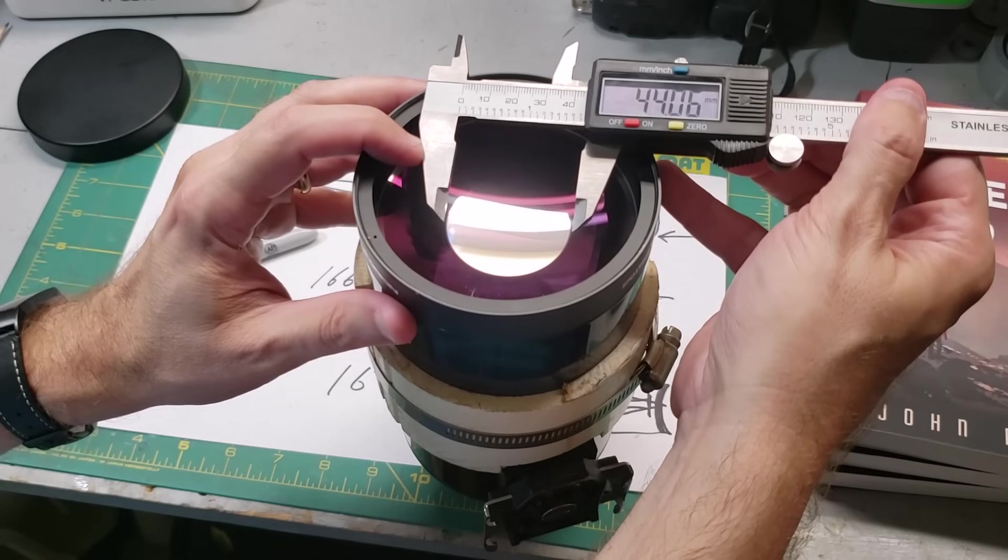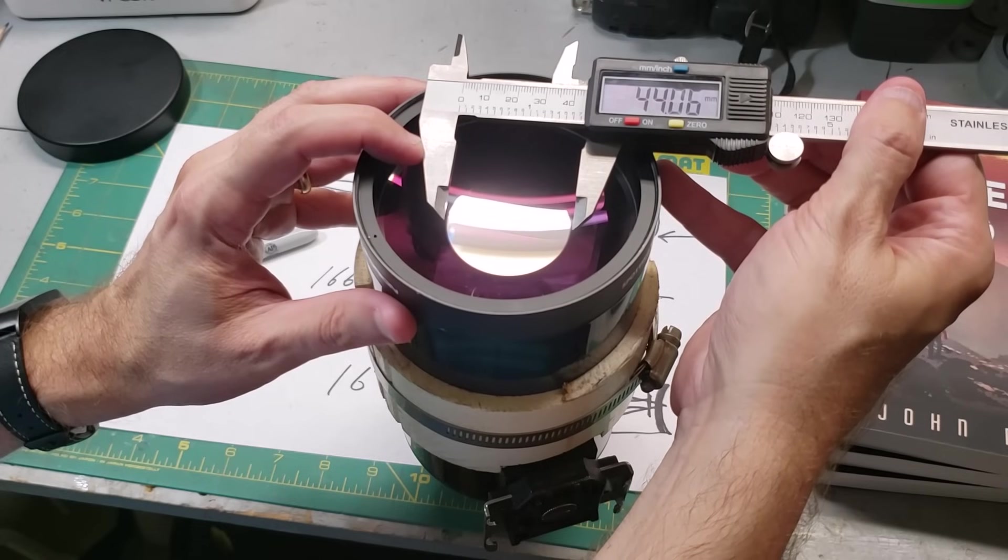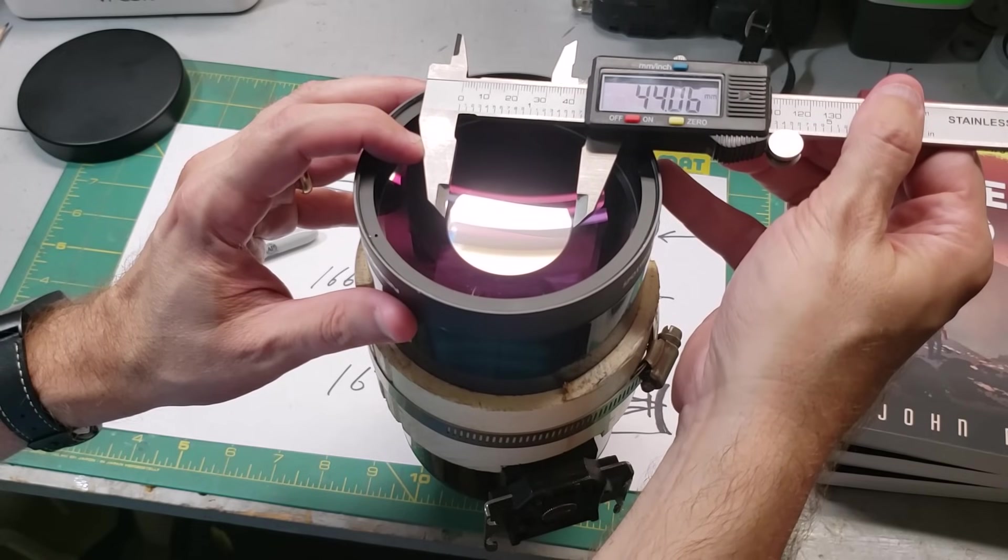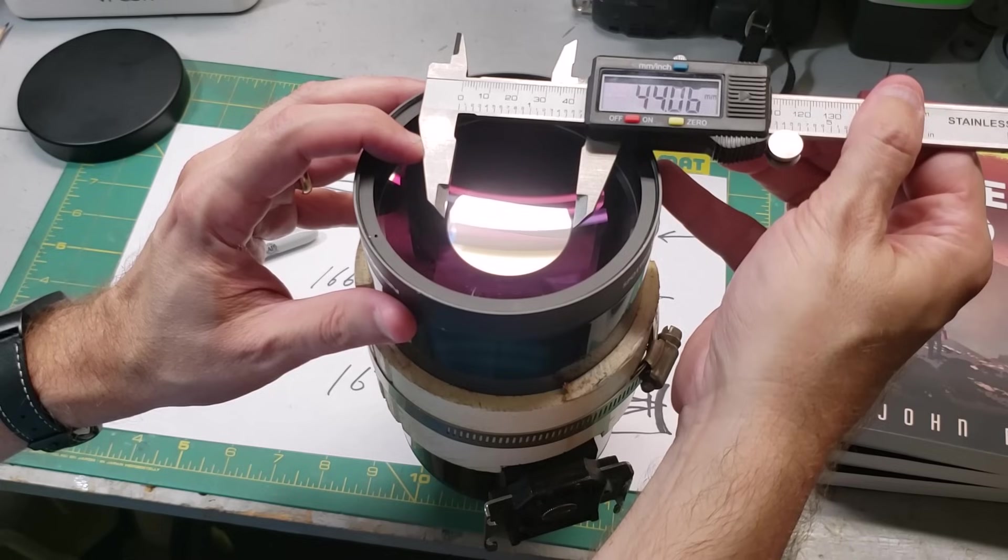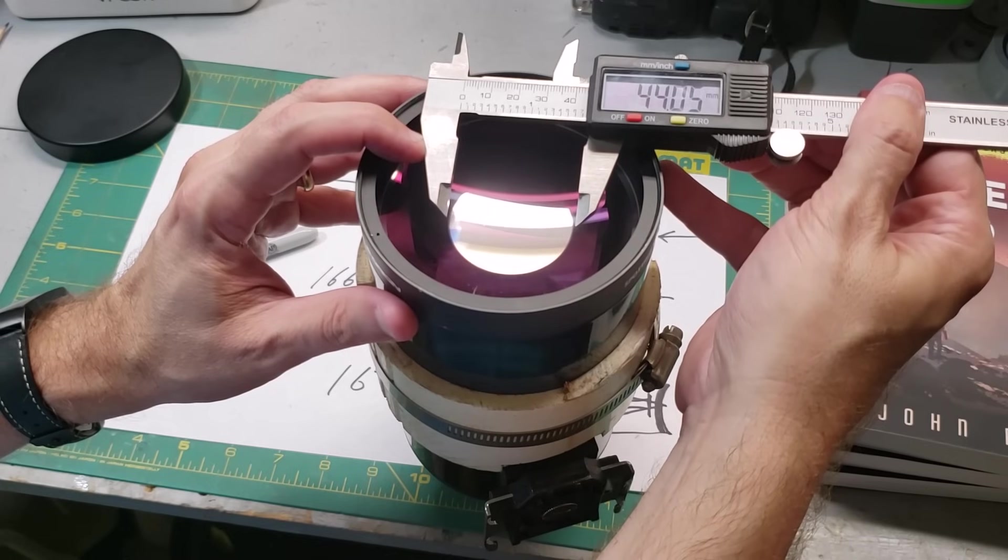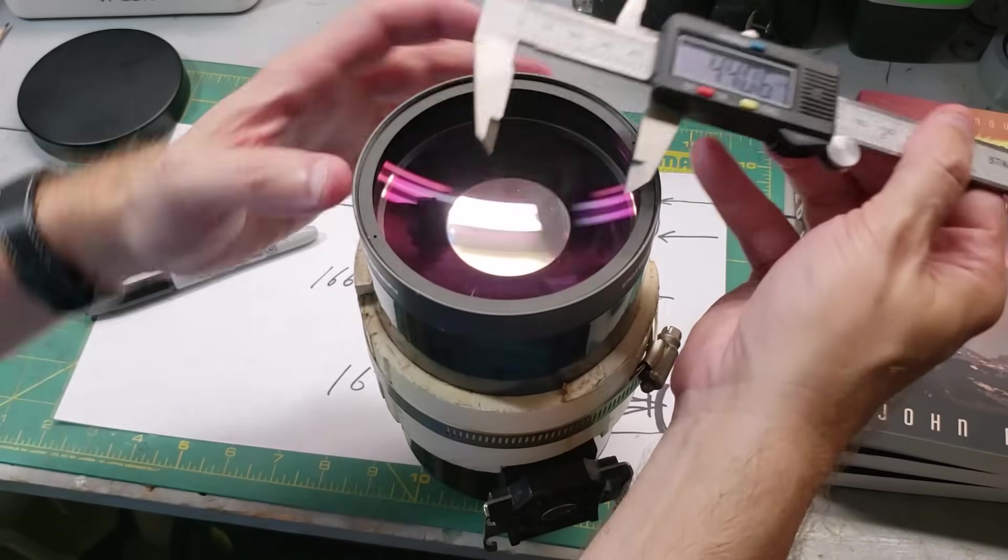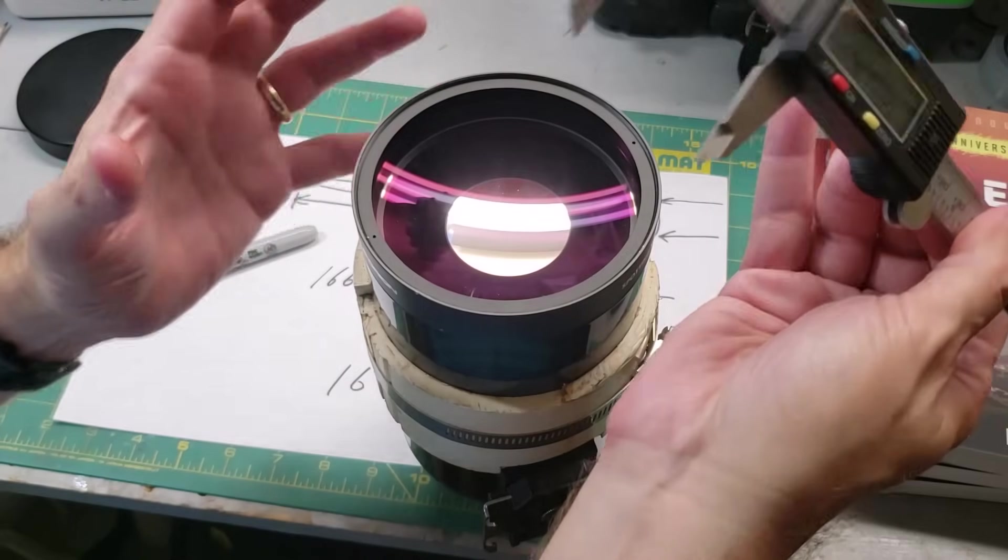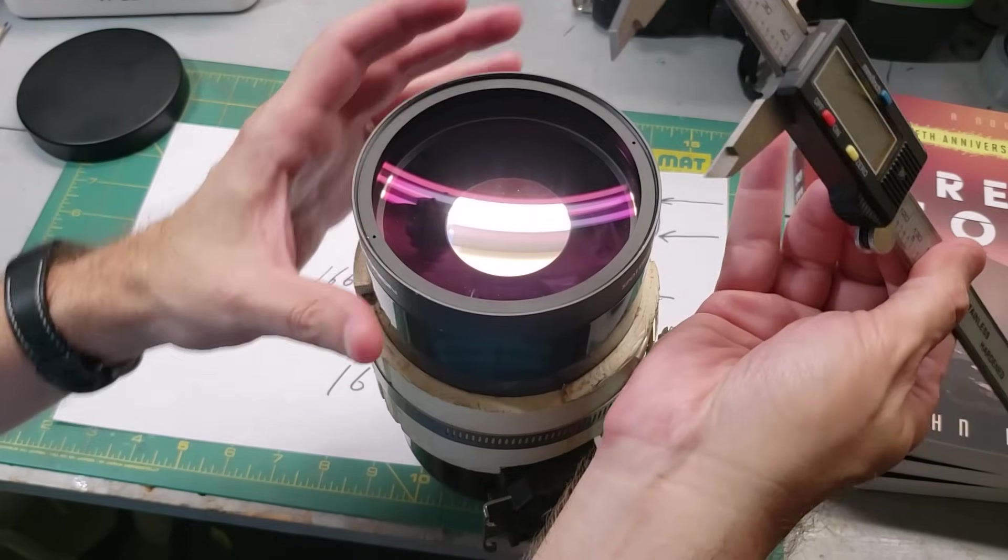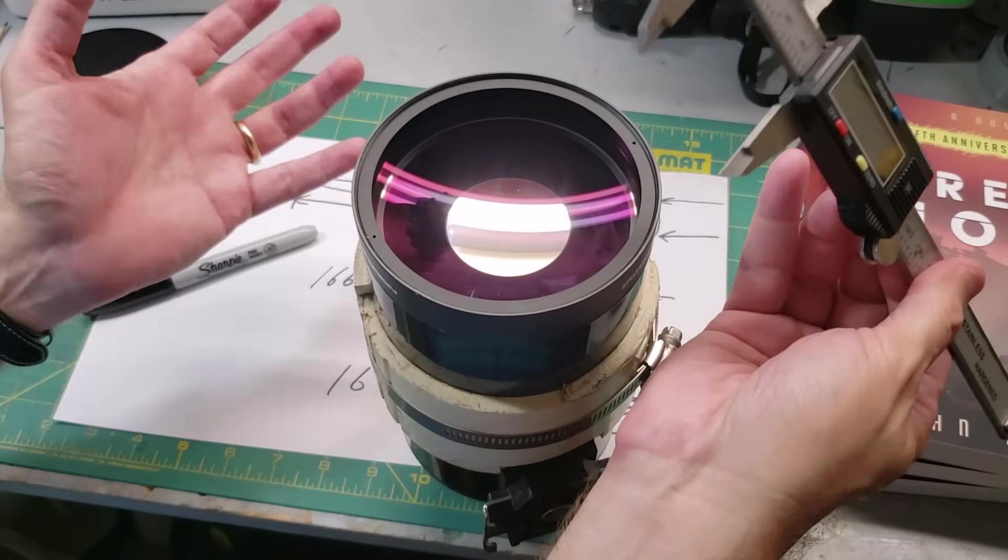For you sharp-eyed viewers, you may have noticed that this mirror is huge. At 44 millimeters in diameter, it eats up a lot of precious real estate on the main light disc that's only 90 millimeters in diameter. It's taken up a whopping 24% of the total area of the front. It seems like a little bit of overkill.